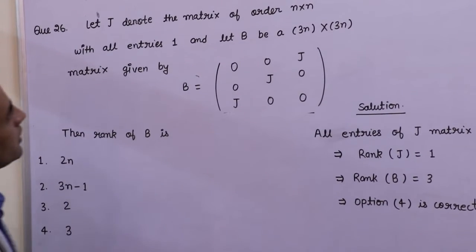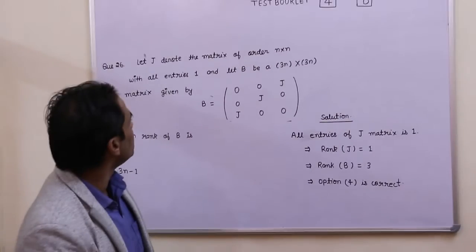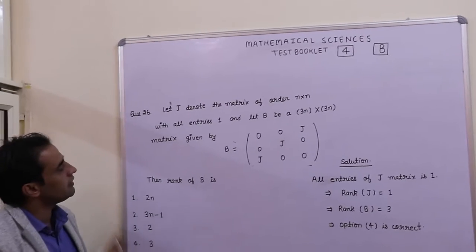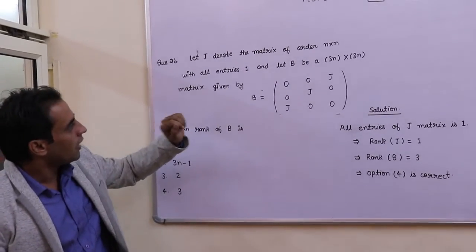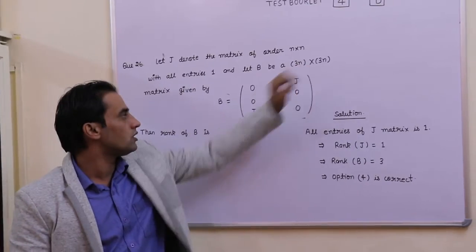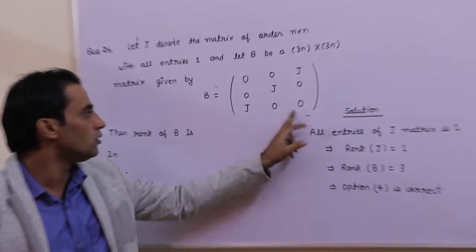Let's start with question number 26. Again, booklet code is V. Here given matrix J is N cross N matrix with all the entries equal to 1, and B is 3N cross 3N matrix such that B equals this matrix.